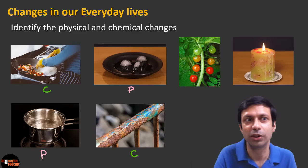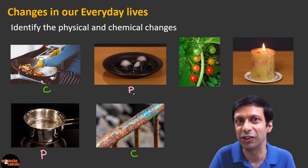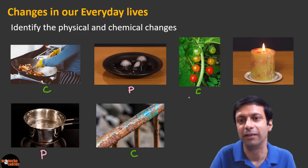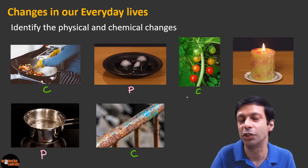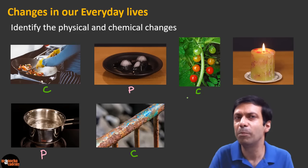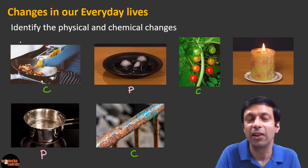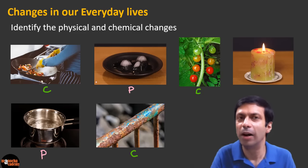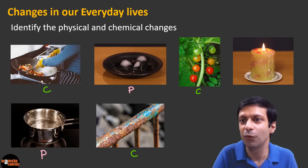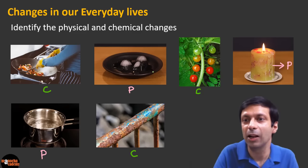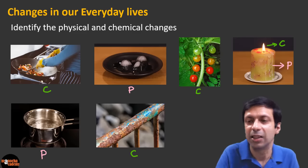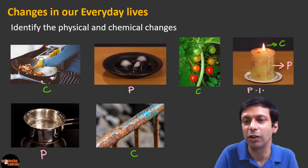What about ripening of fruits? It's a chemical change again, because new substances are formed when the fruit ripens and you can't get back the original form of the fruit. What about the burning of the candle? This is an interesting example because when a candle burns, there is both a physical and a chemical change involved. The burning is a chemical change, but the melting of the wax is a physical change. When the candle burns, it gets converted into carbon dioxide and water vapor. So we can say this is both a physical and a chemical change.